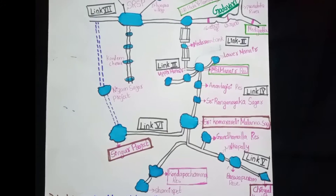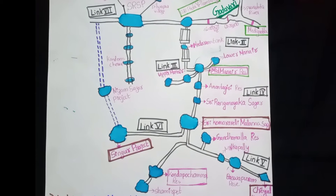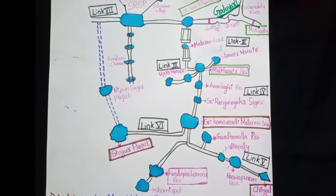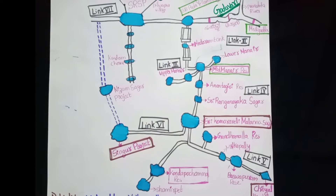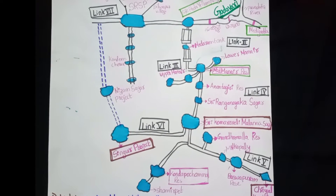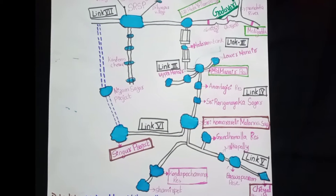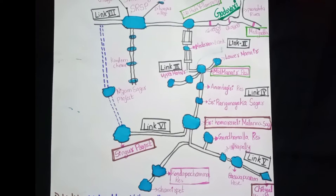This is the total Kaleshwaram project map. The project has 7 links in total.